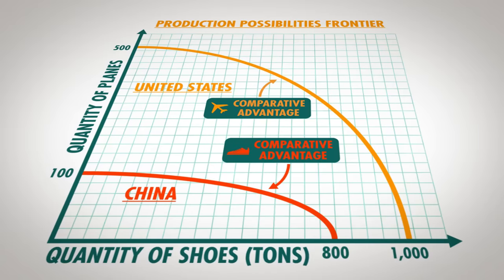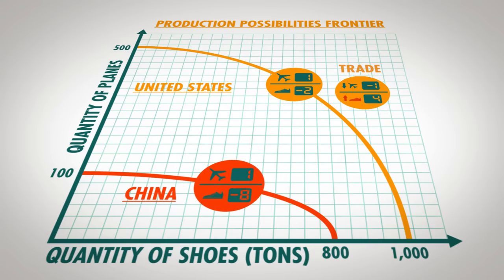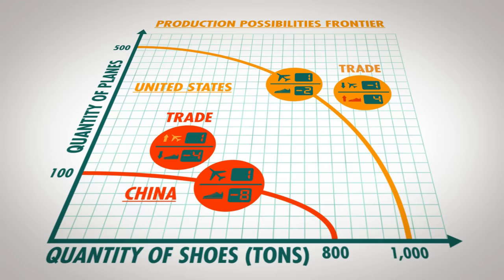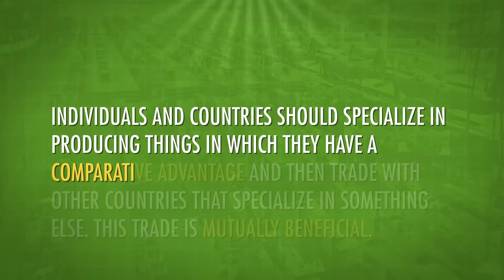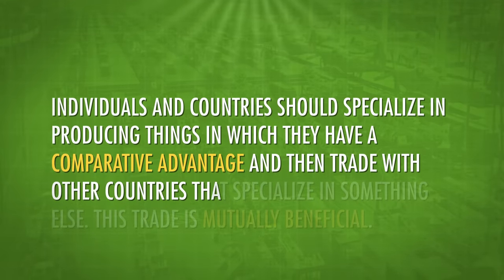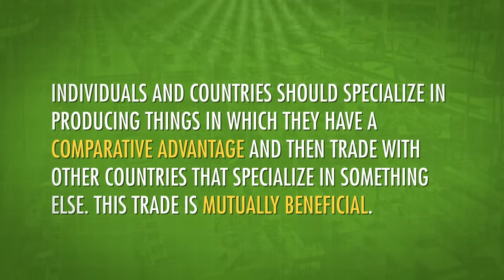Here's the best part. If the U.S. specializes in planes, they can import shoes from China at a lower opportunity cost than if they produce shoes themselves. For example, if these two countries make a deal to trade one plane for four tons of shoes, the U.S. would be better off — they would rather get four tons of shoes per plane from China than only two tons by making shoes on their own. China is also better off: they would rather trade four tons of shoes for a plane than give up eight tons of shoes producing a plane on their own. Individuals and countries should specialize in producing things in which they have a comparative advantage, and then trade with other countries that specialize in something else. This trade is mutually beneficial.